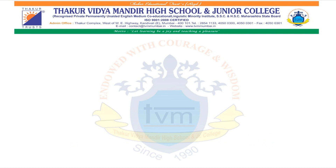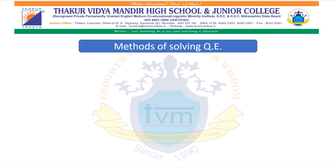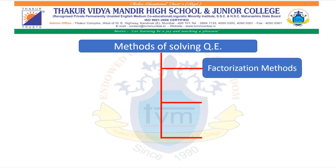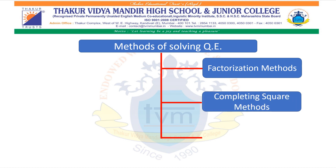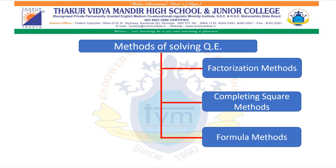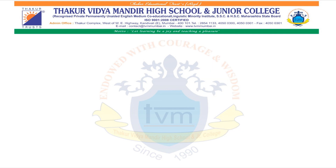Let us see different methods of solving quadratic equations. There are 3 different methods we have for solving quadratic equations. The first one is the factorization method, the second one is the completing square method, and the third one is the formula method. In this video, we are going to study the first method, that is the factorization method.